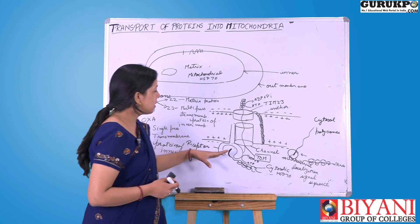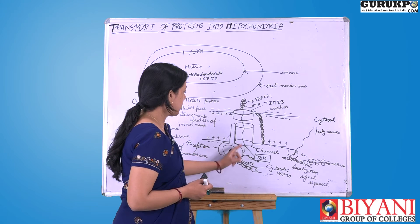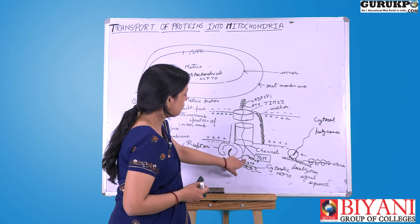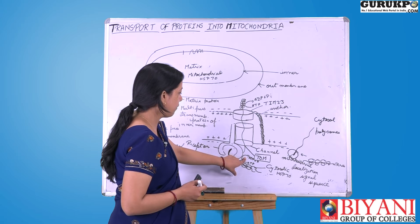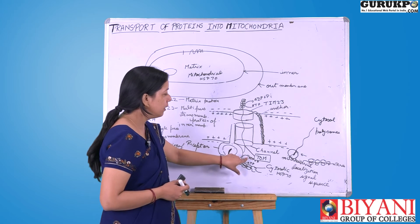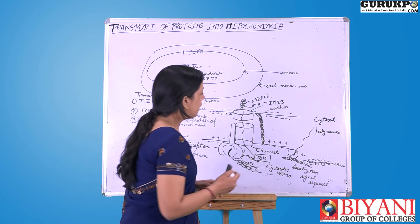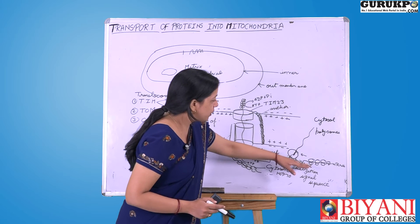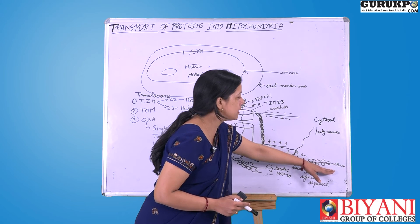When the protein is transported through this channel, ATP is utilized. Energy is required for this process, and it is provided by the conversion of ATP into ADP. These proteins are synthesized by polysomes present in the cytosol.